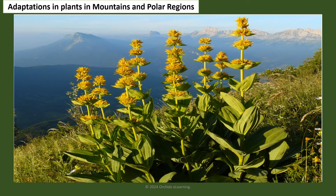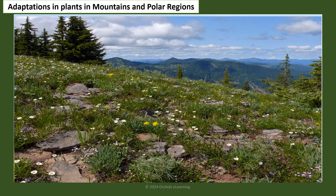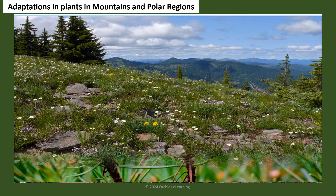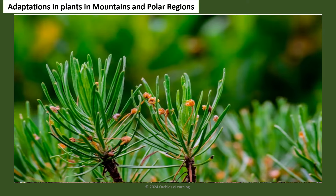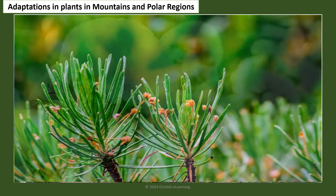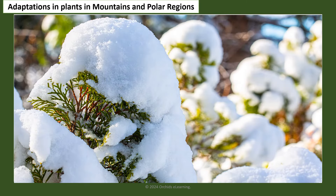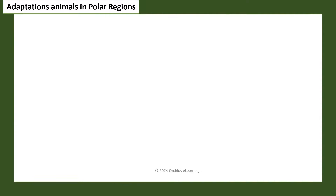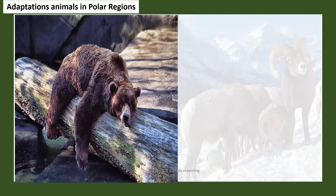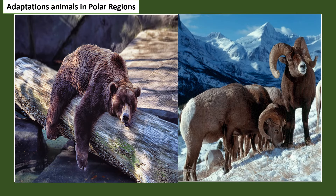Mountain plants grow close to the ground to avoid being uprooted by strong winds. Most plants produce smaller leaves to prevent water loss, and some plants can grow under a layer of snow. Some mountain animals hibernate or migrate to warmer areas during colder months.